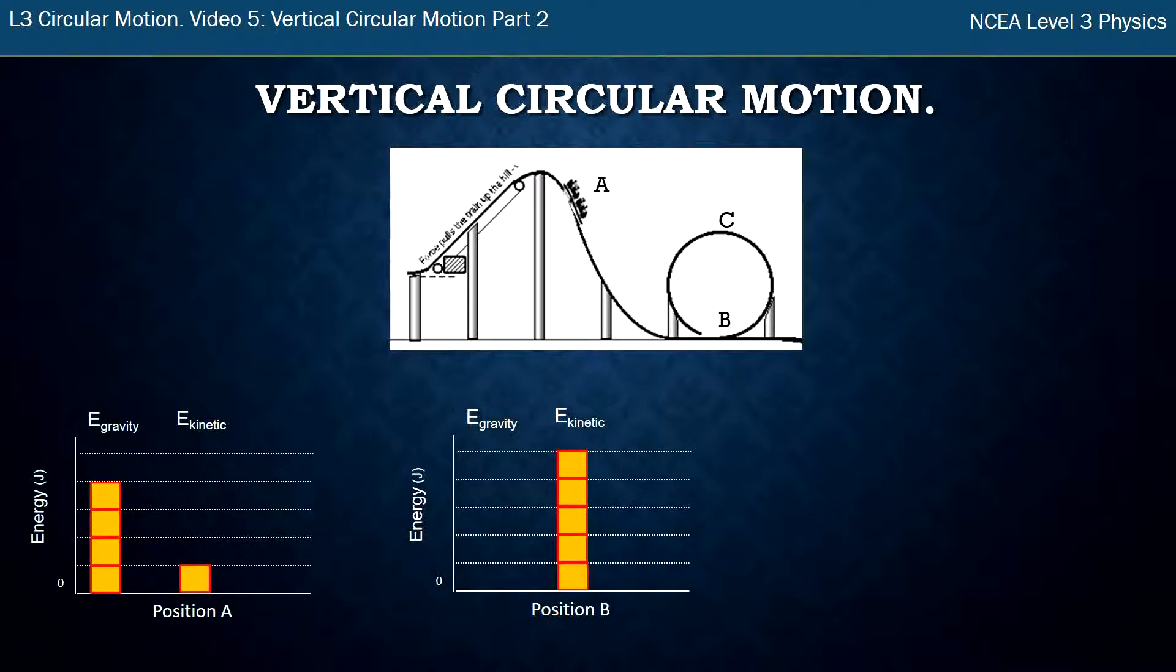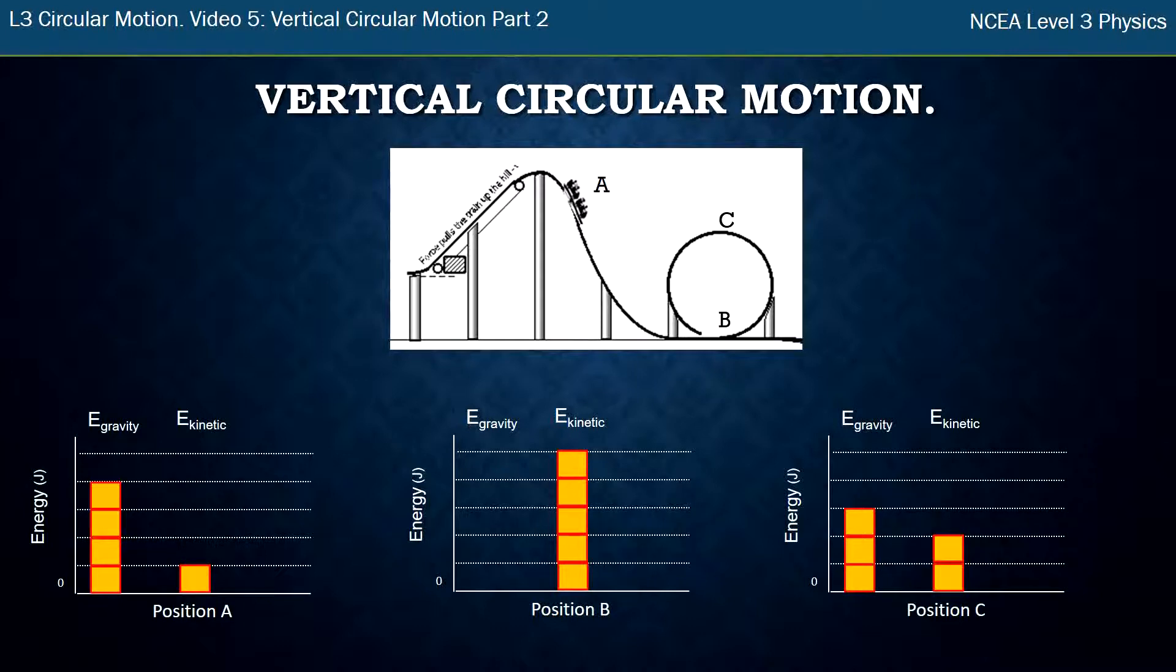As it rolls up and around this loop-the-loop up to point C, it gains some height so that's gravitational energy. Although it's not as high as point A so it doesn't have four bars, it just has three. And then the difference from the total energy we've always had, which is five bars, gives us the kinetic energy, which in this case is the two bars.